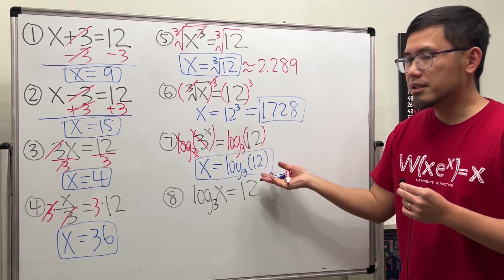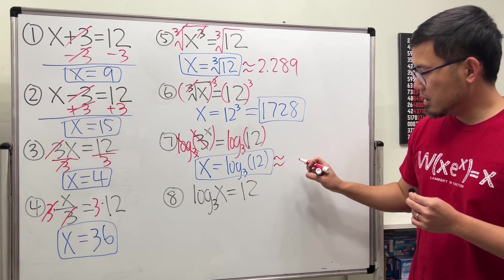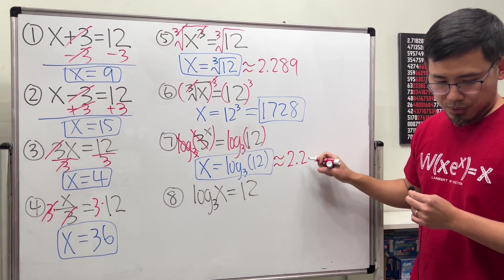And if you want to see how big this number is, you can use the calculator. You get approximately 2.262.